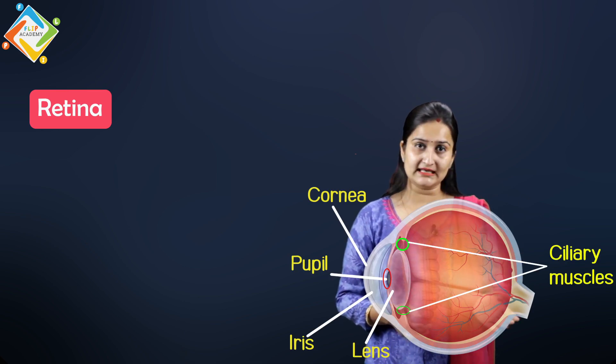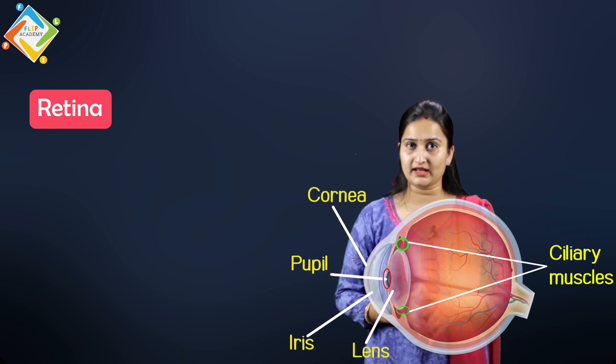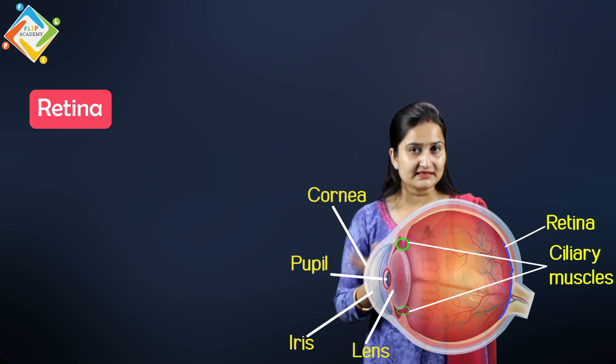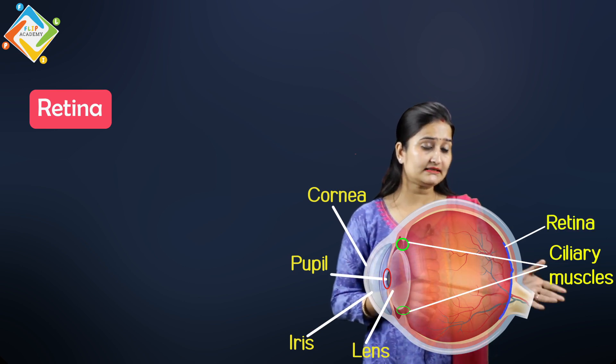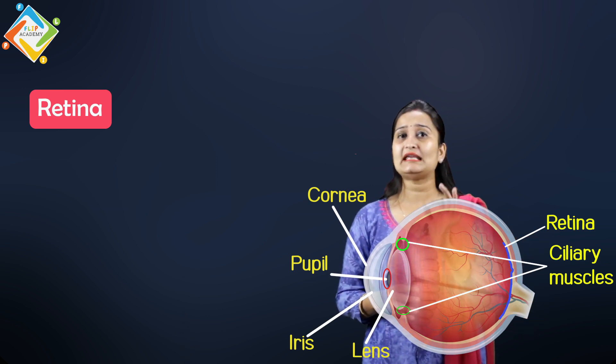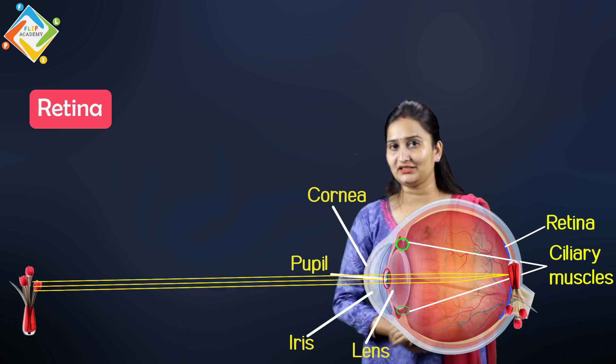Because of the eye lens, an image of any object is formed. Your question might be: where is this image formed? The answer is on the retina. We haven't talked about this very important part yet — the retina. The retina is a screen at the back of the human eye where the image is collected. The retina has many light-sensitive cells, which we call rods and cones.